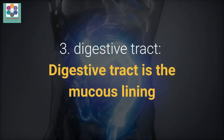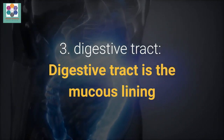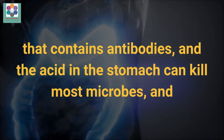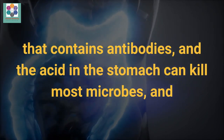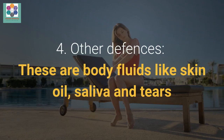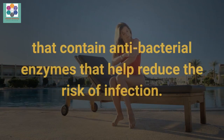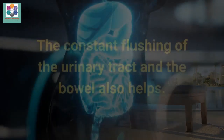3. Digestive tract — the mucus lining contains antibodies, and the acid in the stomach can kill most microbes. And 4. Other defenses — body fluids like skin oil, saliva and tears contain antibacterial enzymes that help reduce the risk of infection.